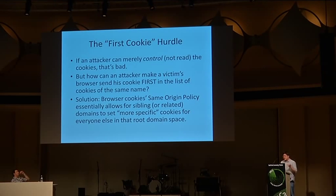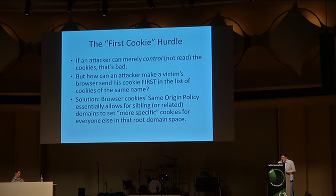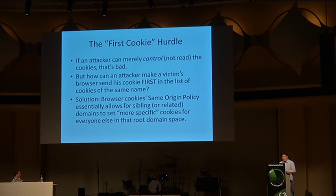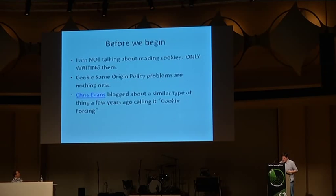If an attacker can merely control — not read — cookies across the domain, that's bad. The same origin policy will prevent a script from one domain from reading cookies from another domain, but what we're interested in is what happens if you can write cookies across subdomains. The question becomes: how can an attacker make his cookie first in order to override cookies set legitimately by the application? One way of doing this is by setting a more specific path, which gives you the ability to set cookies for everyone else in the same broad domain space.